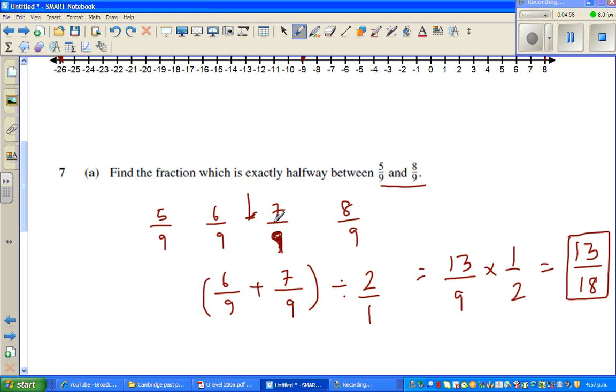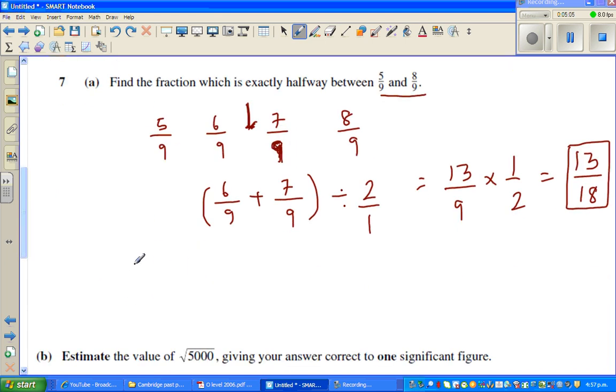This is 5/9, 6/9, 7/9, 8/9. So you want to find halfway. How can you do it in a different way? I'll do one more way. You can also go like this: 5/9 plus 8/9 divided by 2.